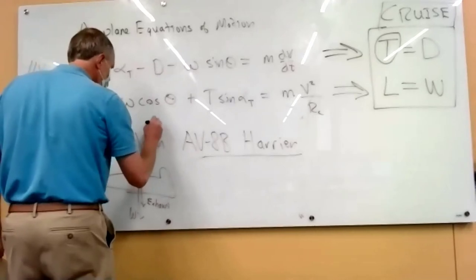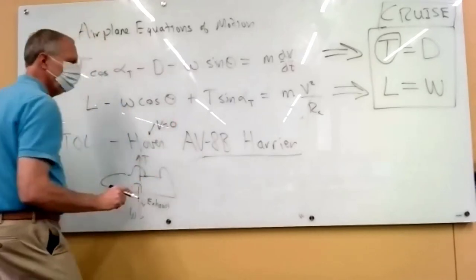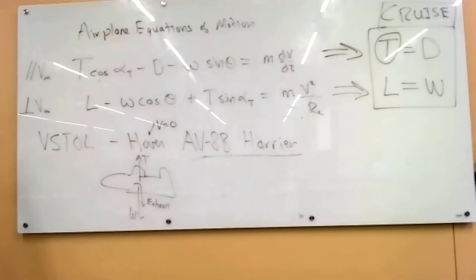And so our free body diagram of this means that the thrust balances the weight and nothing else happens. We're in hover. So the velocity, the forward velocity is zero. The airplane is just sitting there. So how do we take these equations and get that? We've drawn the picture, but these equations should apply.